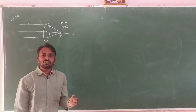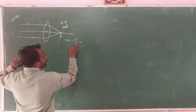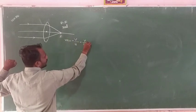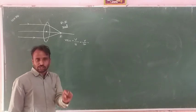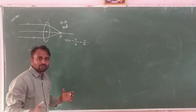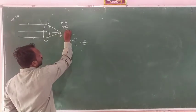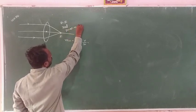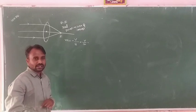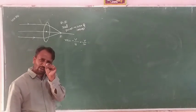The magnification formula is M = −v/u. When the object distance is infinity and the image is at F, the image distance v divided by infinity gives 0 — meaning the image is point-sized. Magnification is less than 1, so the image is highly diminished compared to the object.